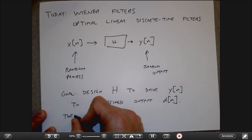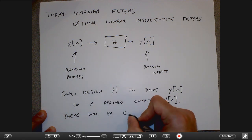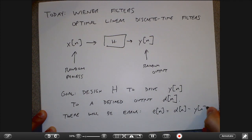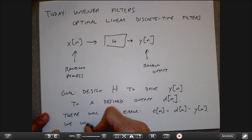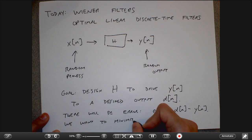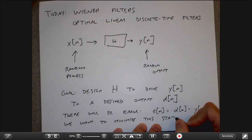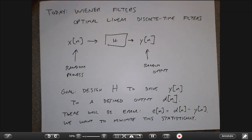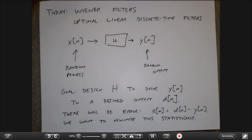The goal is to design the filter H to drive the output to a desired output D of N. There will be error between what I want and what I get, and we want to minimize this in a statistical sense. A very common thing you want to do is predict the next value of the signal — the desired value is X of N plus 1, for example.